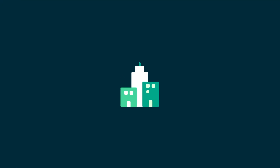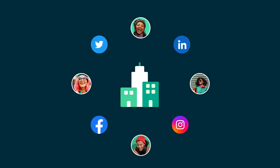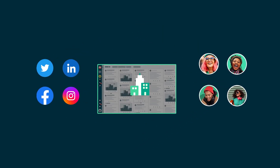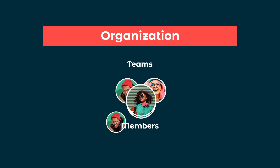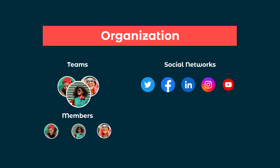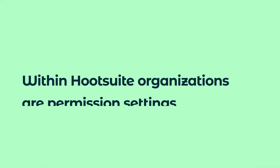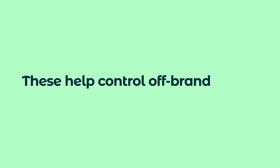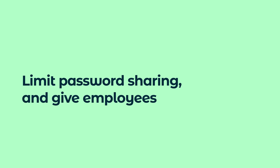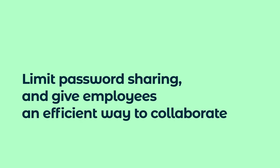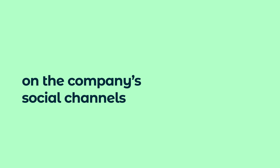A Hootsuite organization is the overall structure of how your company's employees and social media networks are organized within Hootsuite. An organization includes teams, members, and social networks. Within Hootsuite organizations are permissions settings. These settings help control off-brand or accidental communications, limit password sharing, and give employees an efficient way to collaborate on the company's social channels.